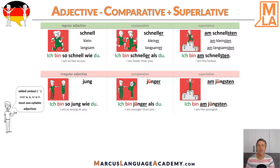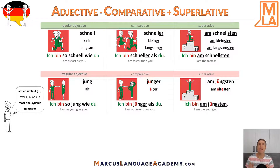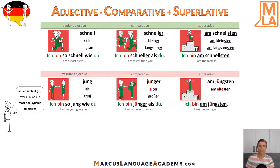Here are two more examples of irregular adjectives. For example, 'alt': 'älter', 'am ältesten' — old, older, the oldest. Another example: 'groß', 'größer', 'am größten' — big, bigger, the biggest.